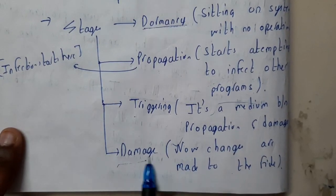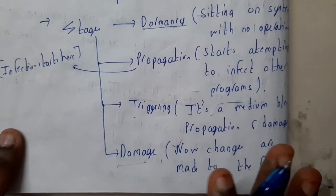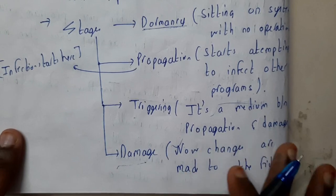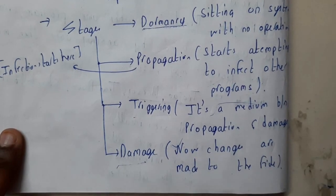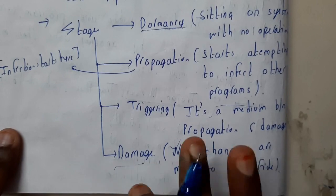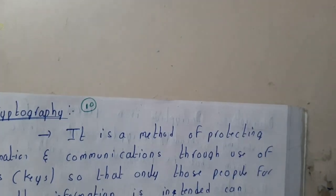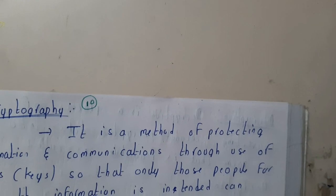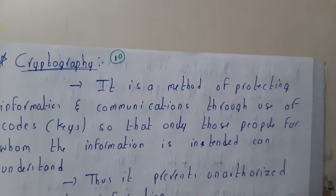Then comes the trigger stage, which is the medium between propagation and damage. Damage is the final stage where the file is actually damaged. Even after damaging the file, the virus still exists — it will not die once it is done. It will try to repeat the same process again and again.